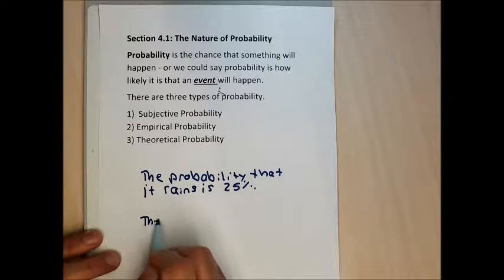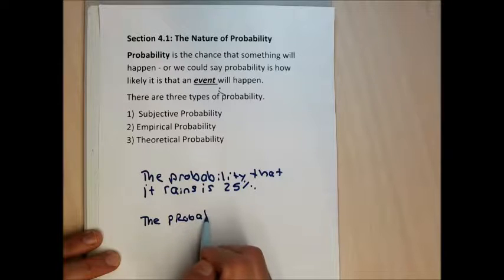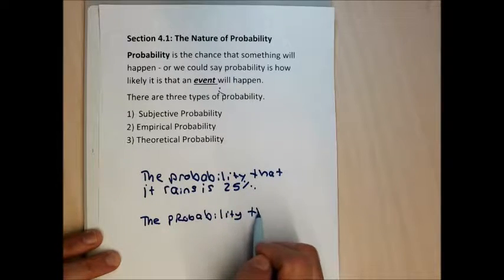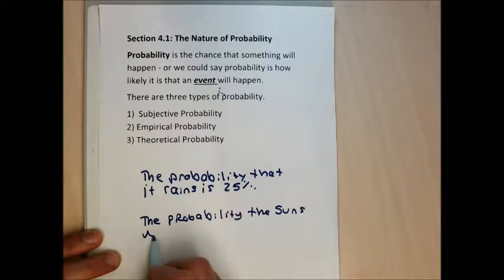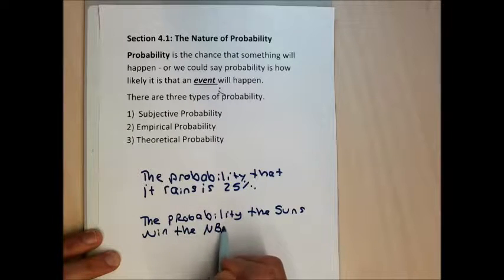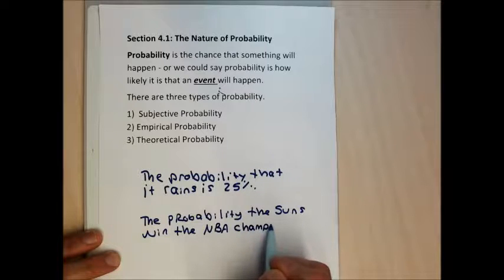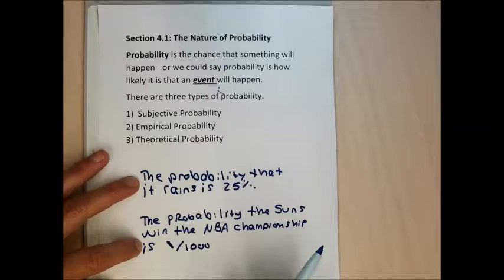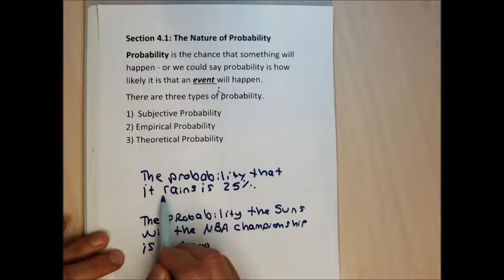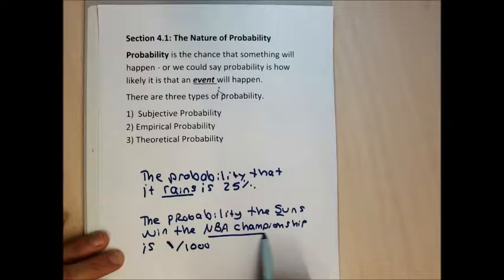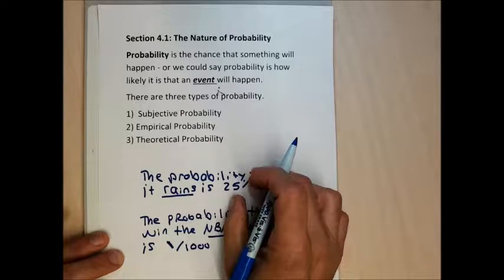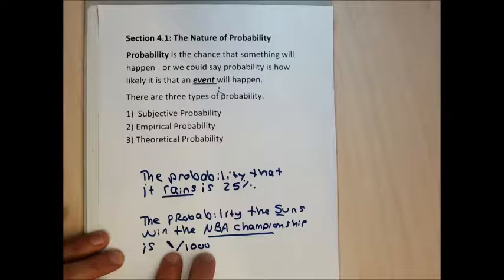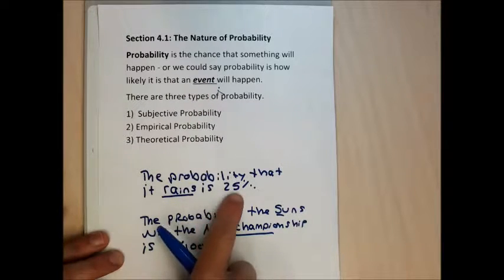Another example: the probability the Phoenix Suns win the NBA championship this year is about 1 in 1,000. Probabilities are just the chance that something will happen — what we call an event. Notice in the rain example I used a percent, and in the NBA championship example I used a fraction. These are the two common ways to attach a number to the probability that an event will happen.